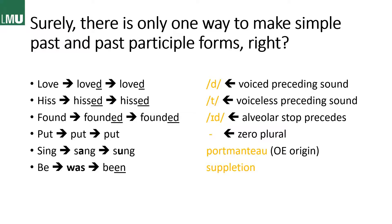And then we have the verb 'found' — 'founded' — which ends in an alveolar stop, in this case a d. It could also be a t in other cases. And then we have -id at the end, simply because we would find it very difficult to say 'foundd' — that just doesn't sound right. And then we have the zero form: 'put,' 'put,' 'put' — no marking at all.